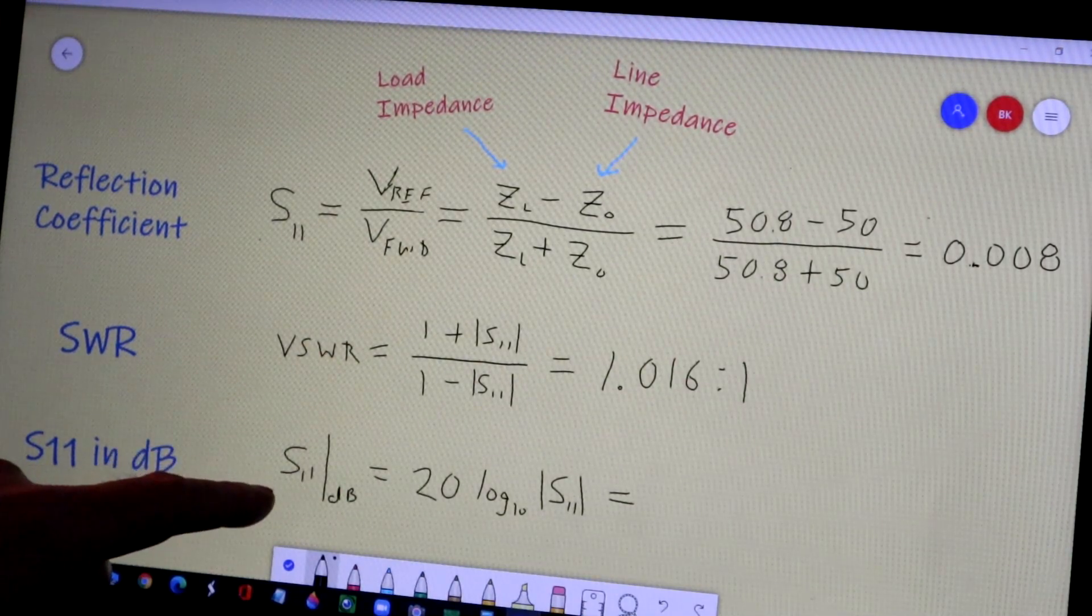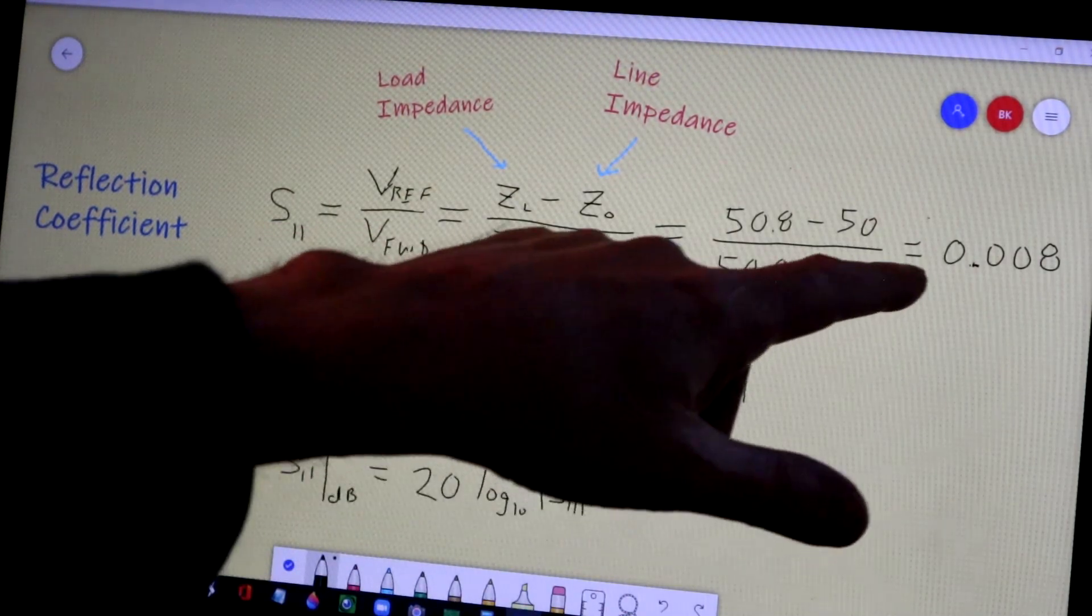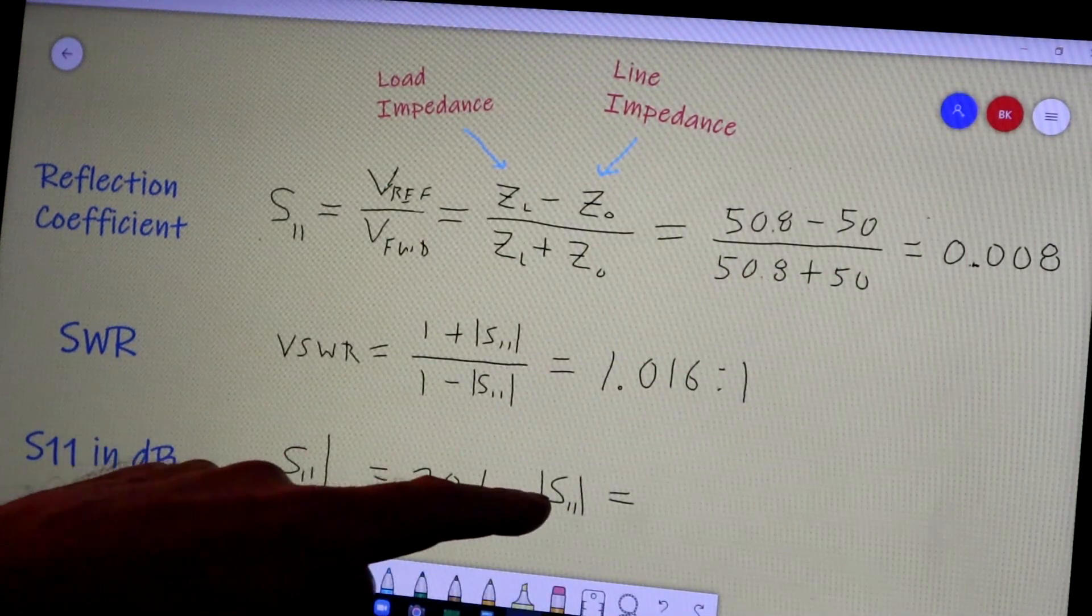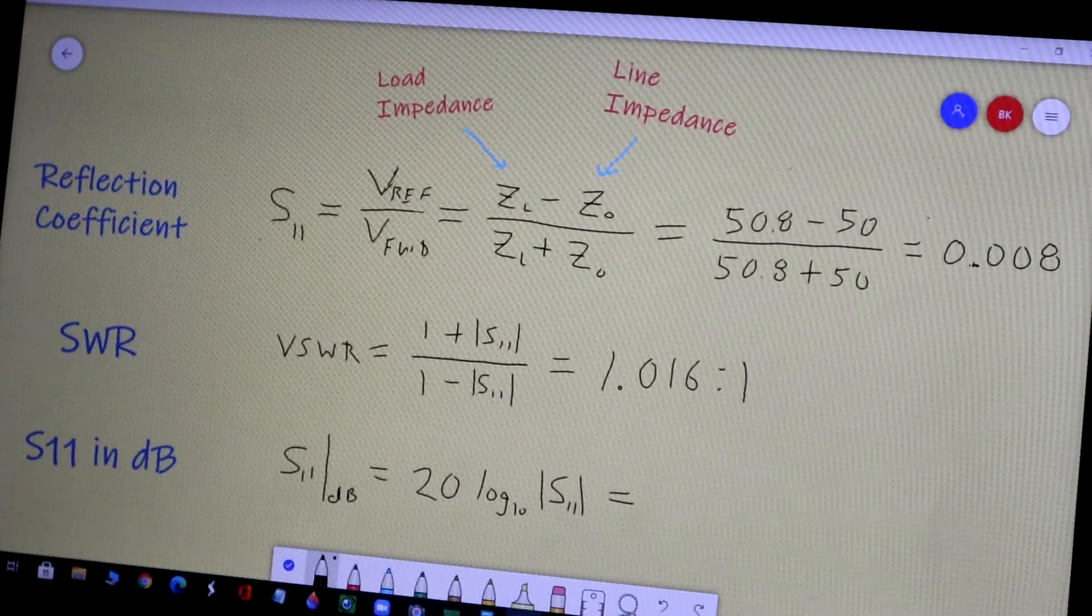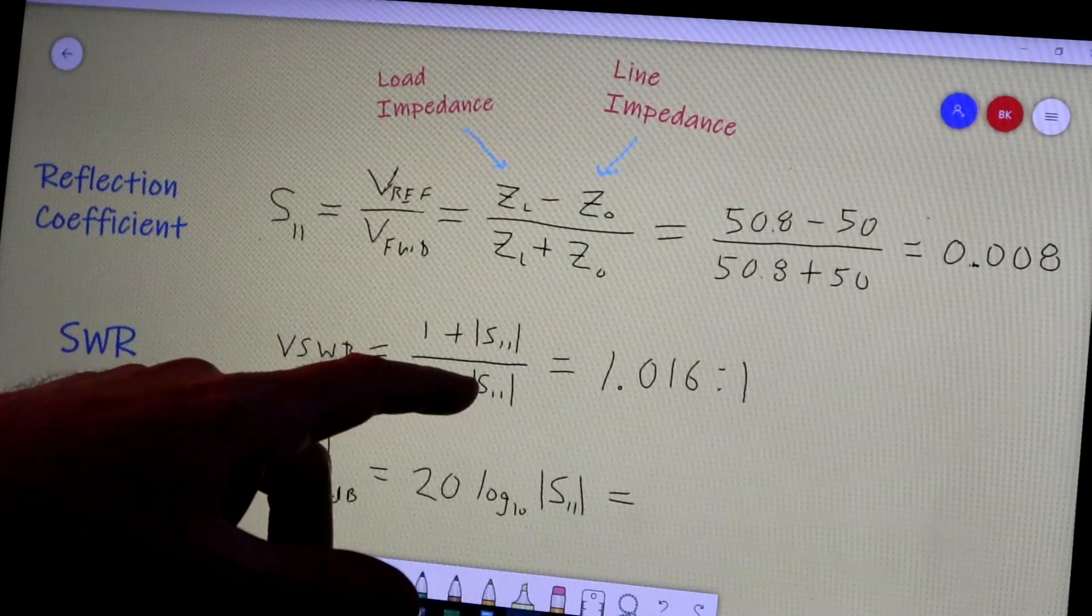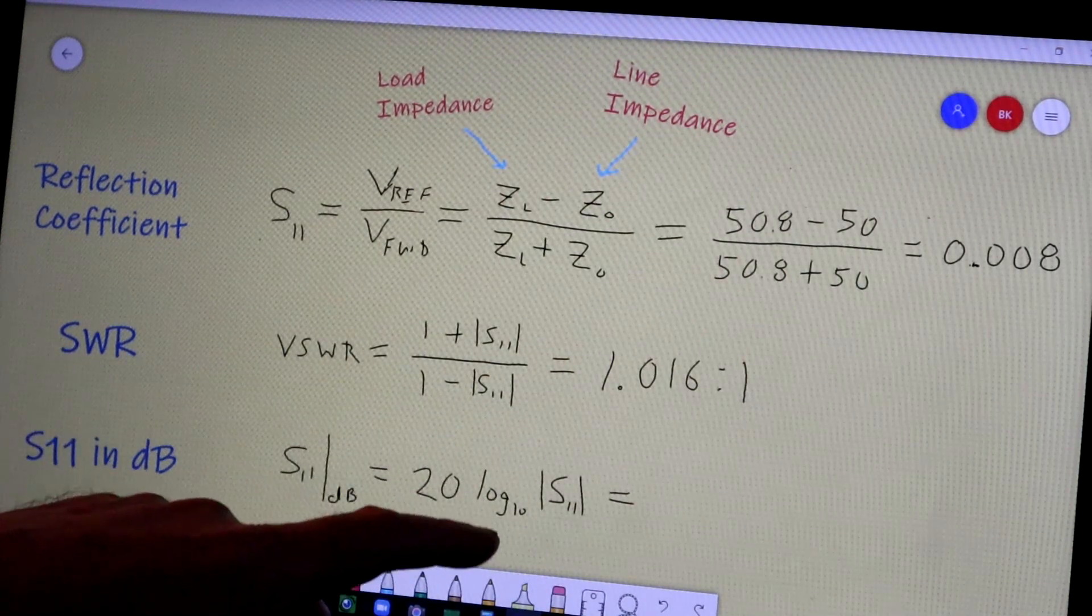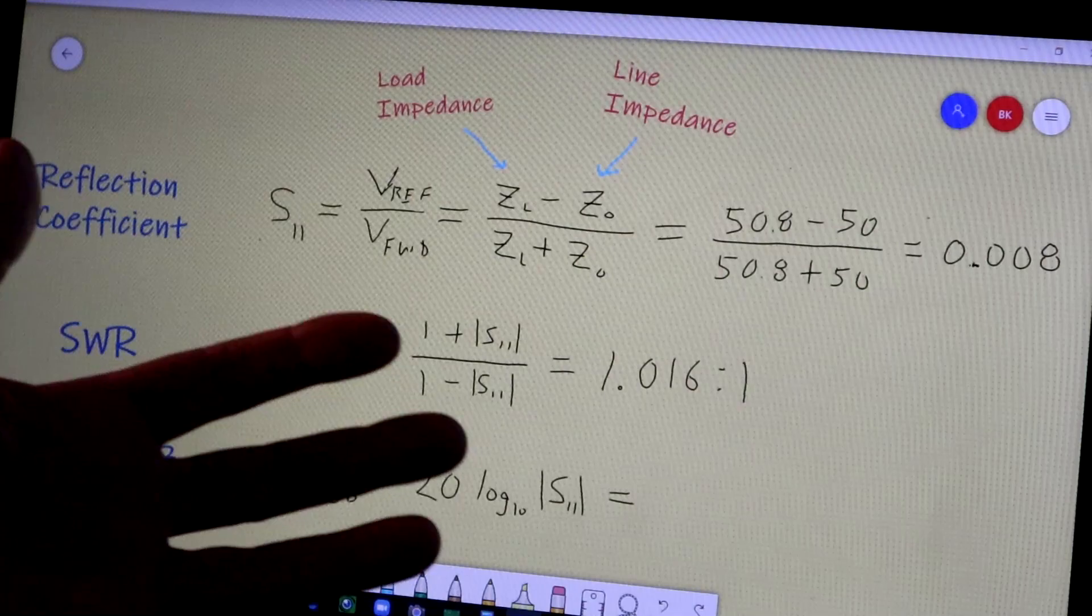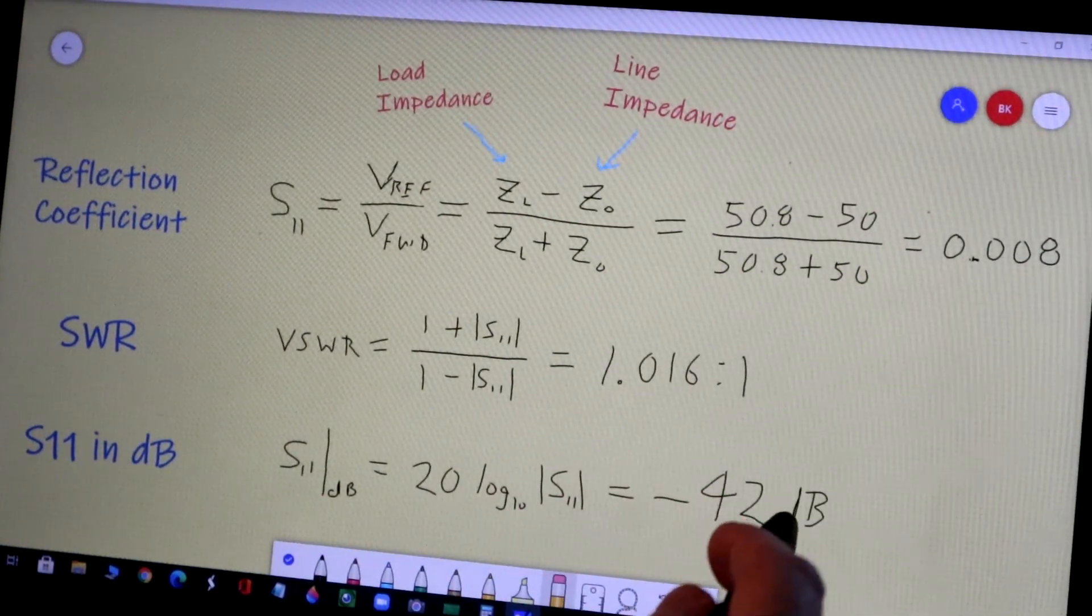Here the relationship between S11 not in dB, which is what we figured out up here to be 0.008, and S11 in dB is we take S11—vertical lines here simply mean take the magnitude of it. In general these are two-dimensional numbers, complex numbers with magnitude and phase, but we'll skip all that complexity here. So we take 20 times the log to the base 10 of S11. We just punch that into our calculator and what we get is minus 42 dB.